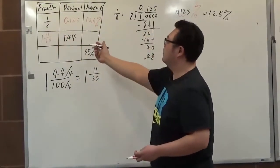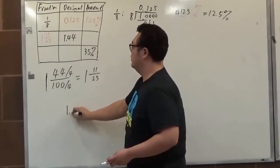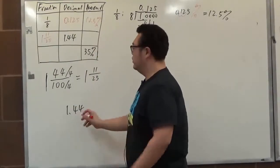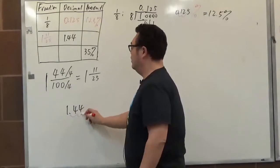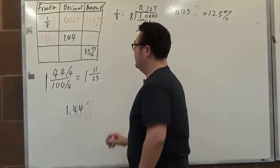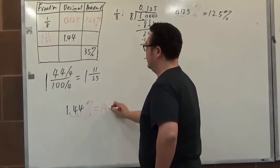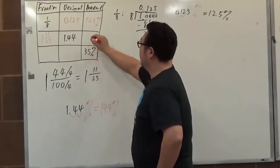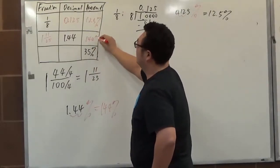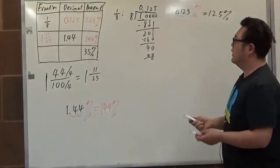And of course, when we convert 1.44 to a percentage, it's the same way — we just move 2 units of the decimal point to the right side and attach a percentage symbol at the end, giving us 144%.